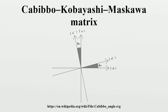In particle physics parlance, the object that couples to the up quark via charged-current weak interaction is a superposition of down-type quarks, here denoted by D. Mathematically this is expressed using the Cabibbo angle, with the currently accepted values for V_ud and V_us.